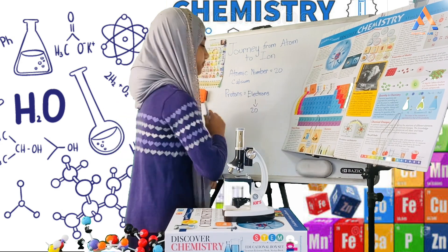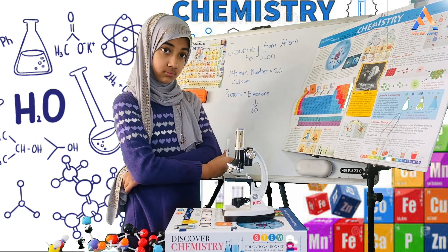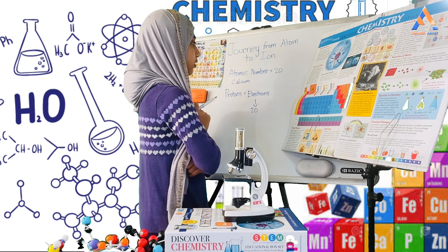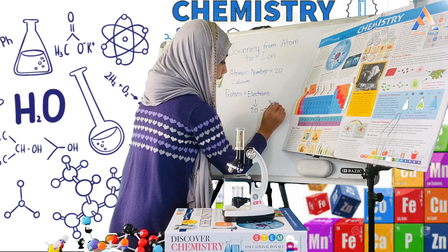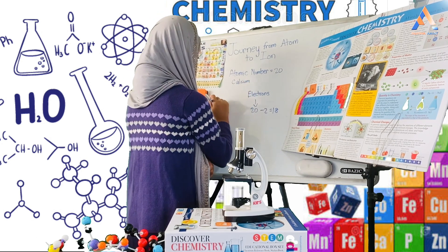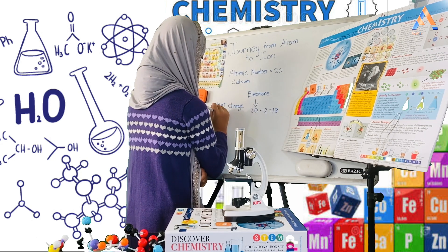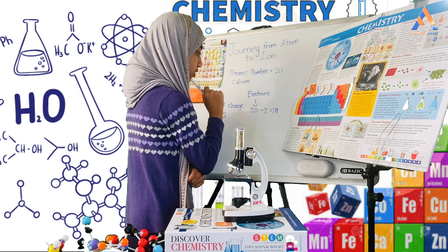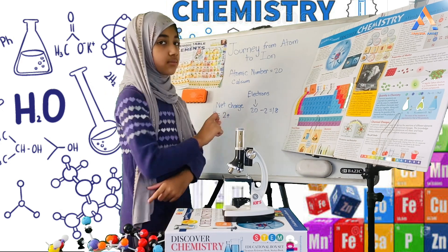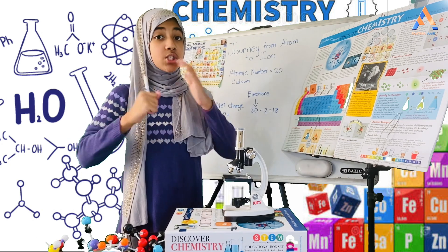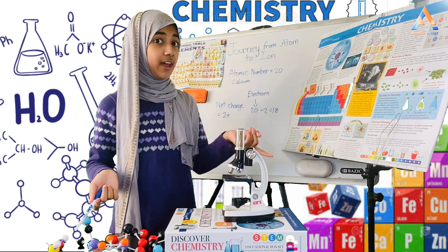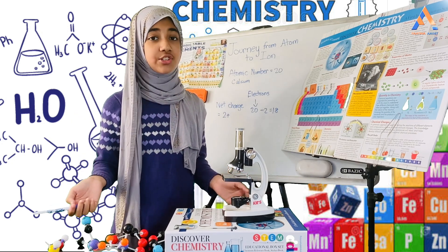Now, if calcium gives away two electrons, the electron count comes down to 18. What is the charge? The protons remain at 20 and the electrons are now 18, so there are two more protons than electrons. The net charge would be +2. Since it is a positive charge, this is a cation. Remember: plus charge means cation, minus charge means anion.